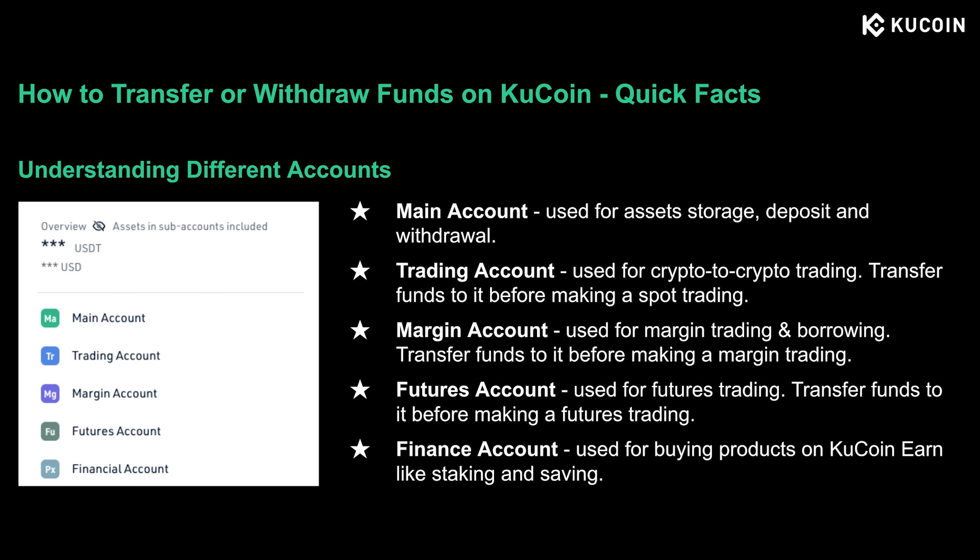The margin account, as its name tells, is used for margin trading and borrowing, and you need cryptos in your margin account before you make a margin trade. A futures account is of course used for futures trading. Last but not least, the finance account — you may have heard it for the first time — is used for buying products on CoolCoin Earn, such as staking and savings. Now that we're clear about what each CoolCoin account is for, we can start practicing transferring funds.